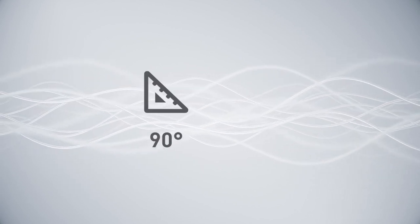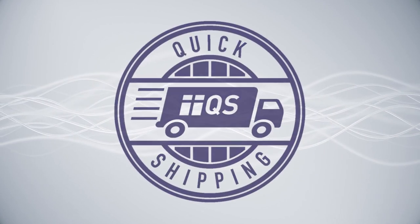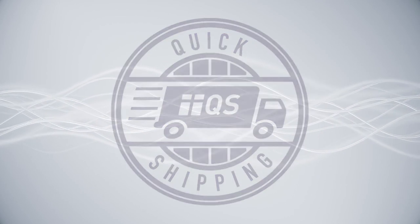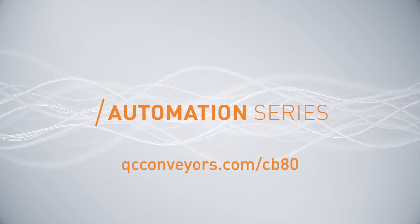90-degree curved conveyors with widths of 15.7 inches and 23.6 inches are available as part of our Quick Ship program with just a five-day lead time. For more information, visit qcconveyors.com slash cb80.